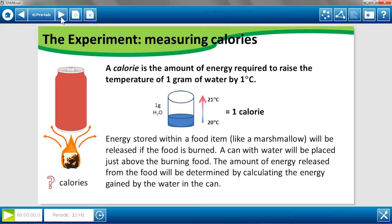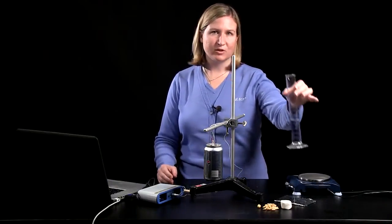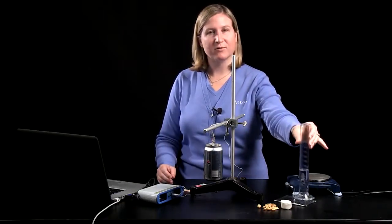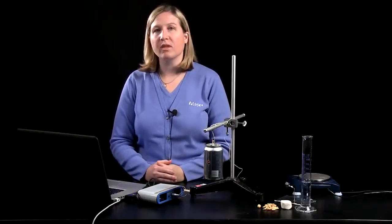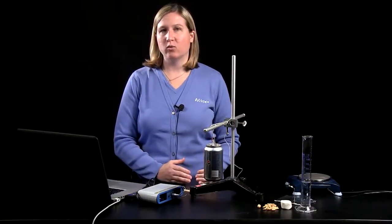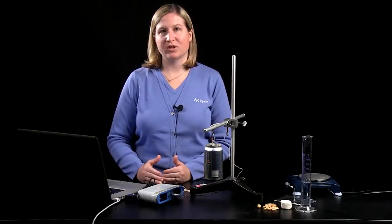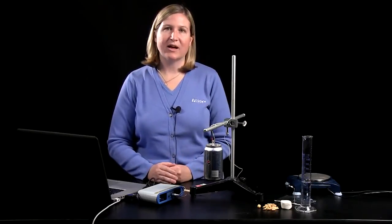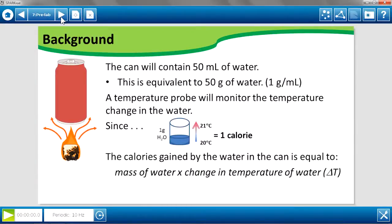So if we put a known amount of water, in this case 50 milliliters, so you'll have students measure in a graduated cylinder 50 milliliters of water each time, which will be 50 grams of water. They can take that known amount of water, 50 grams, measure the amount of temperature change that occurs within the water, and multiply those values to get the number of total calories that were gained by the water.